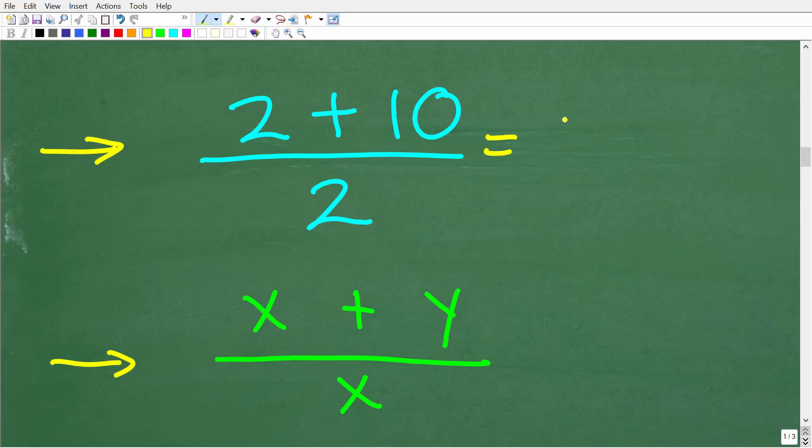2 plus 10 which of course is 12. 12 divided by 2 is 6. So again you cannot cross cancel unless you have like factors and that means that the numbers or variables are separated by multiplication.